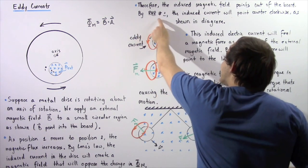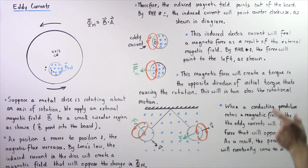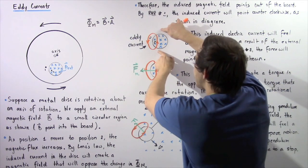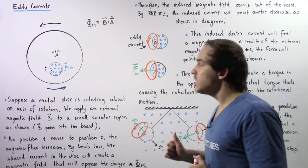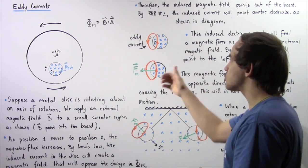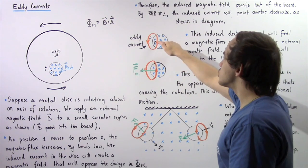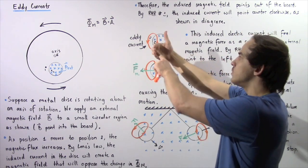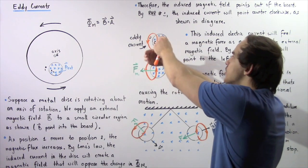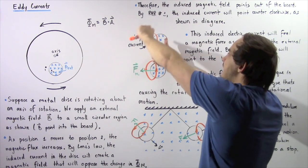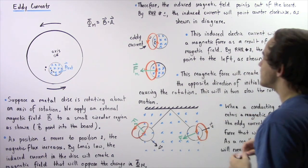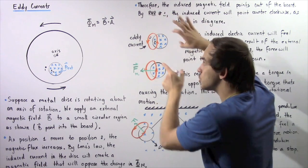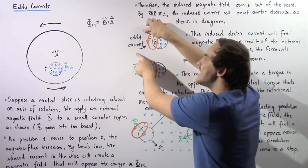By right-hand rule number 1, the induced current will point in a counter-clockwise direction, as shown in the following diagram. To apply right-hand rule number 1, we curl our fingers so that they come out of the board, extend the thumb, and the thumb indicates the electric current pointing in a counter-clockwise direction. This induced electric current is known as an eddy current.